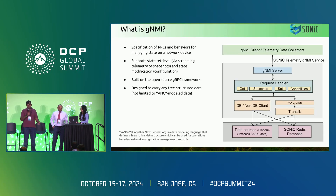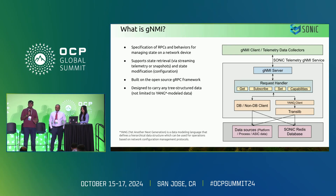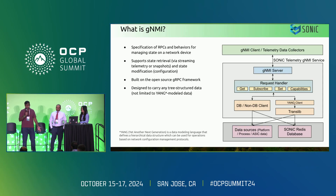What is GNMI? GNMI is a network management interface. It's a specification of RPCs and behaviors for managing the state of a switch. It supports both mutating the state of the switch through a config push, as well as retrieving telemetry from the switch. It's built on the open source gRPC framework and is designed to carry any kind of data that's structured as a tree form, yang being one example.